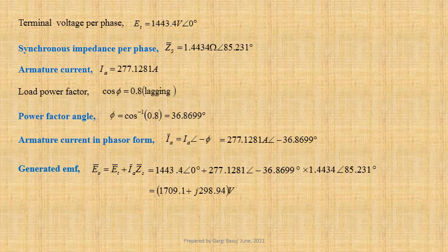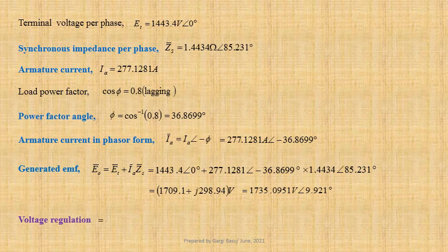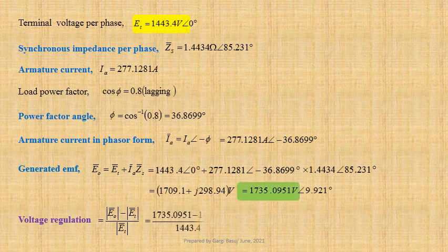This may be written in polar form as 1735.0951 volts at an angle 9.921 degrees. Voltage regulation equals E0 minus ET divided by ET. Using values: (1735.0951 minus 1443.4) divided by 1443.4, giving 0.2021 per unit or 20.21 percent.